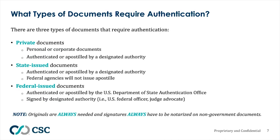There are three types of documents that require authentication. Private documents, such as power of attorney. State-issued documents, such as a good standing or certificate of incorporation. Federal-issued documents, such as IRS tax documents. One important note: CSE always requires an original copy of the document — a photocopy should never be sent to CSE as it will be rejected by the consulate or embassy.